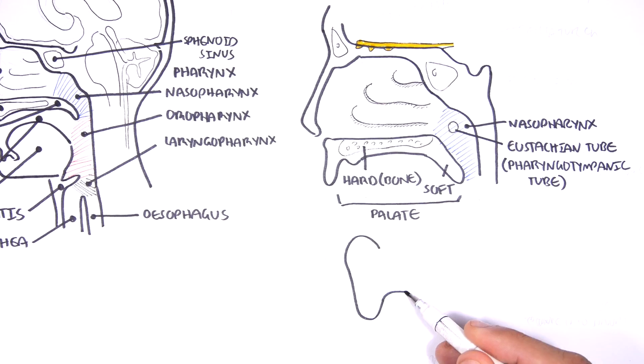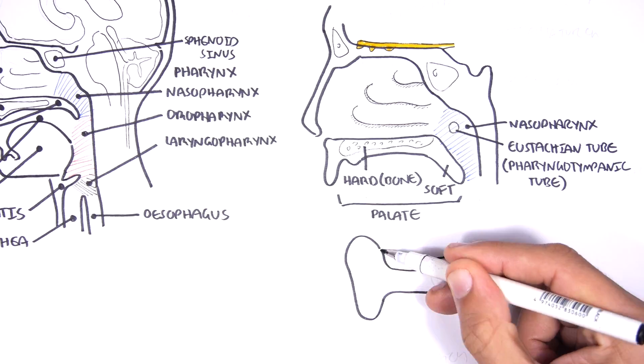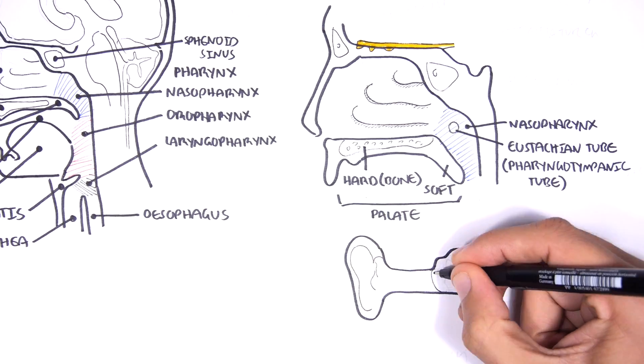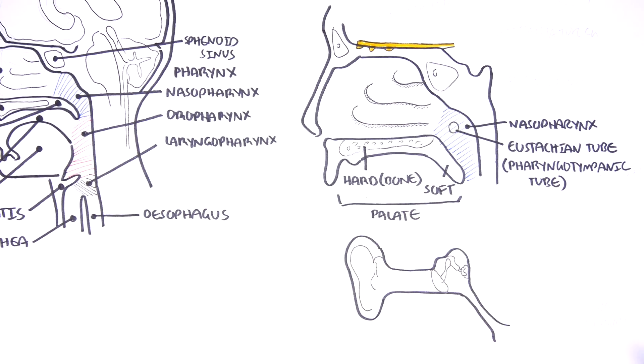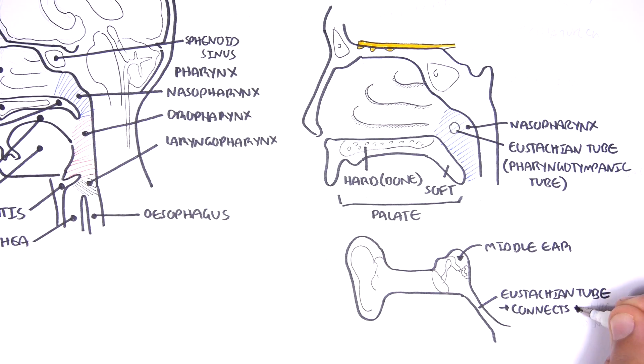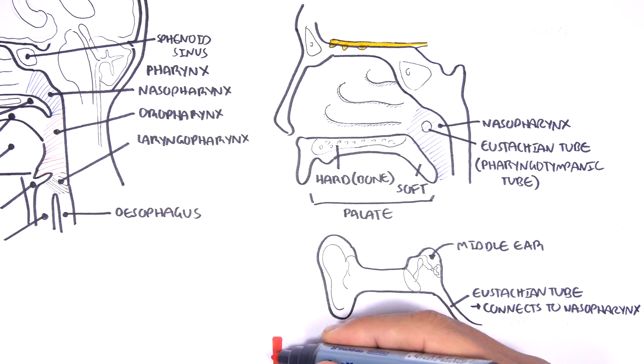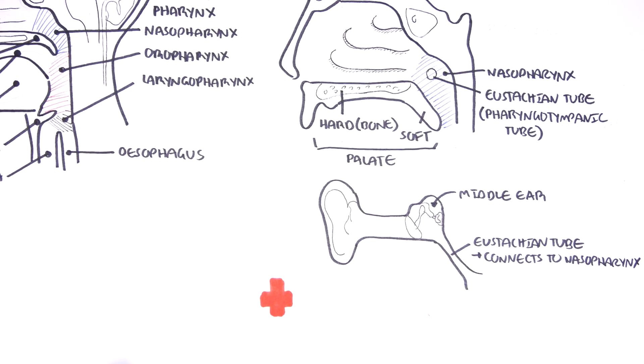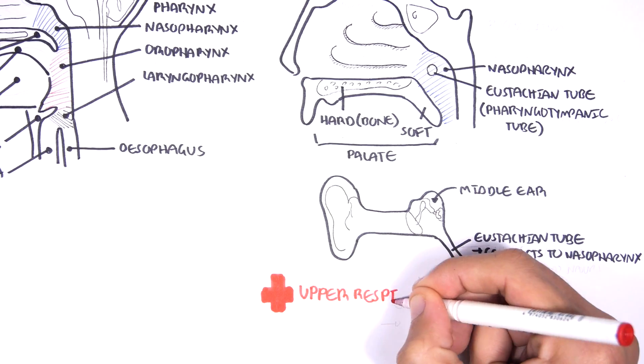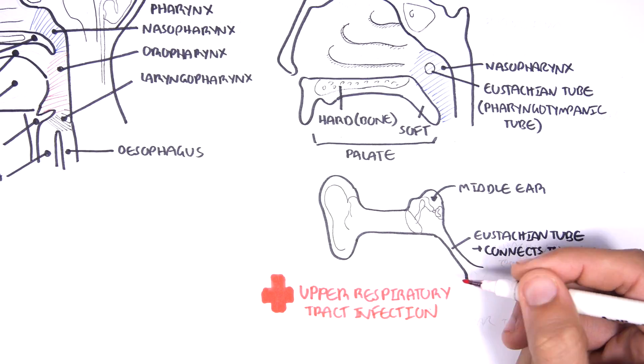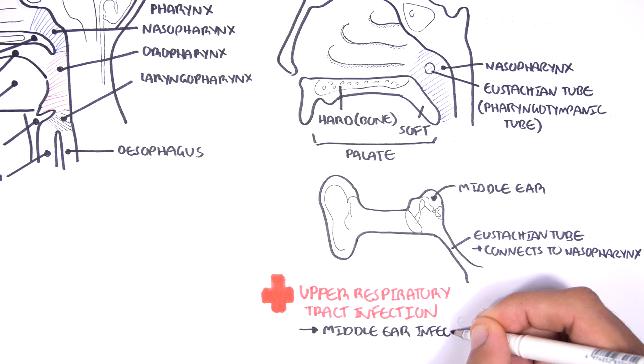This tube literally connects your middle ear to the nasal cavity. So, if we were to draw the inner and middle ear quickly, this is your middle ear where you can find your auditory ossicles, the smallest bones in your body. And this is the eustachian tube, also known as the pharyngotympanic tube. The clinical significance of this is that if you have an upper respiratory tract infection, this can subsequently cause a middle ear infection because there is this tube and it's a gateway to the middle ear.